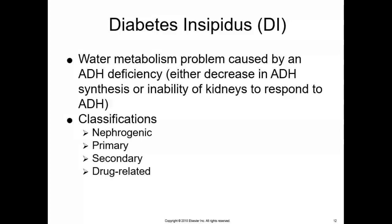When you think about what ADH means — antidiuretic hormone — antidiuretic means anti-urination. So diabetes insipidus is a disorder of the posterior pituitary gland in which water loss is caused either by antidiuretic hormone deficiency or an inability of the kidneys to respond to antidiuretic hormone.